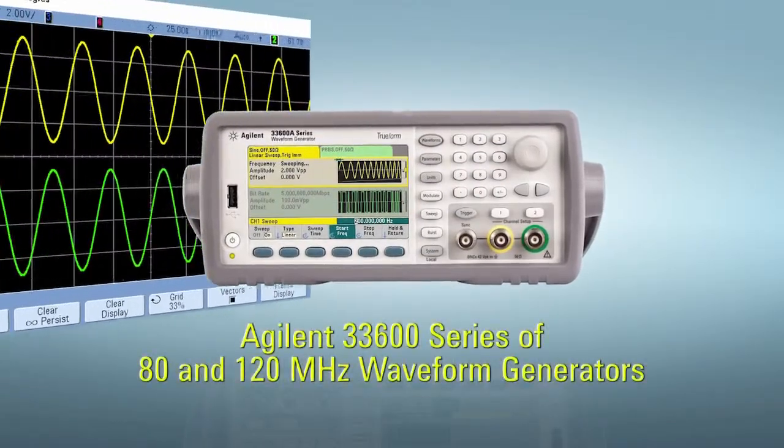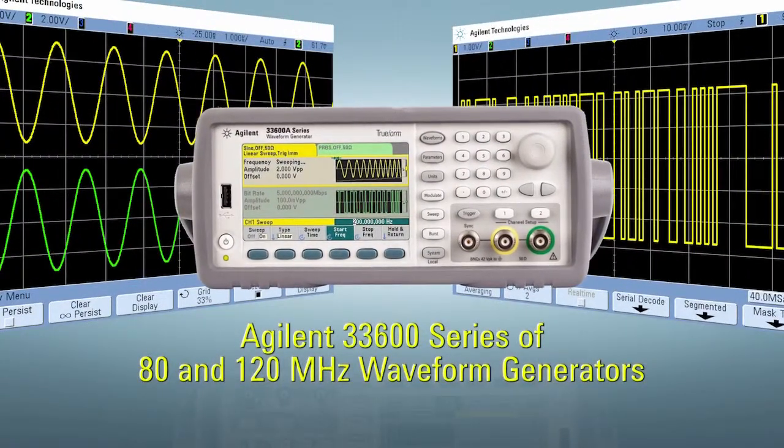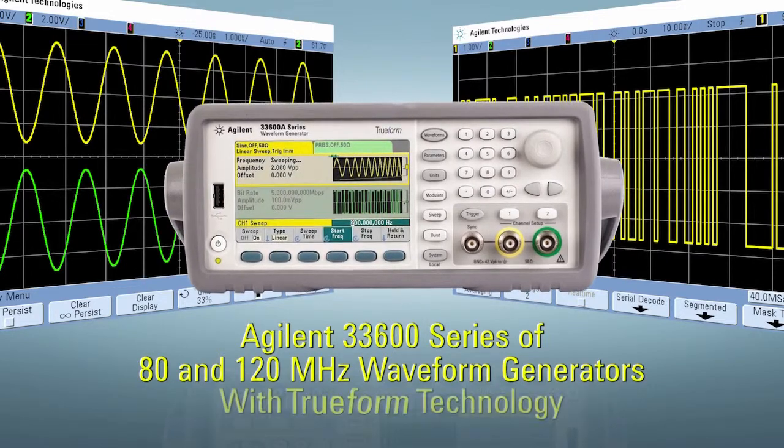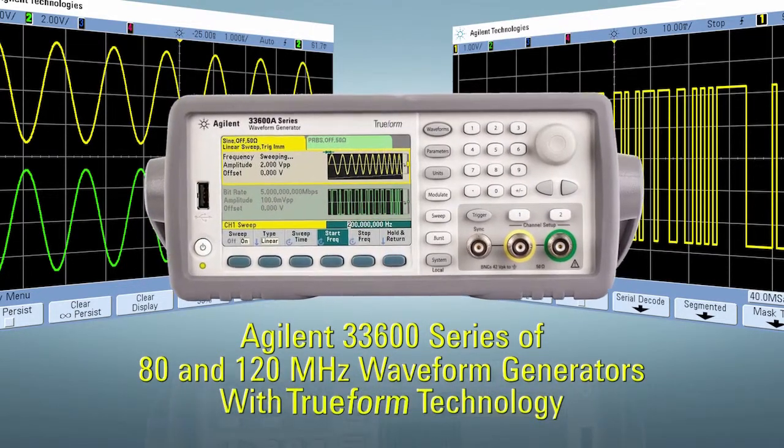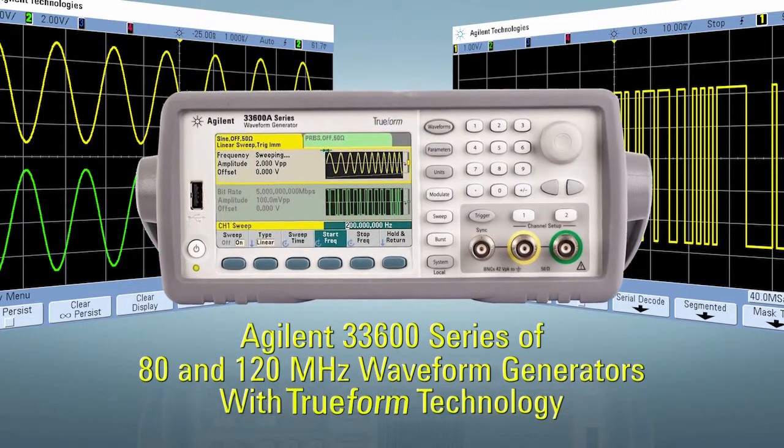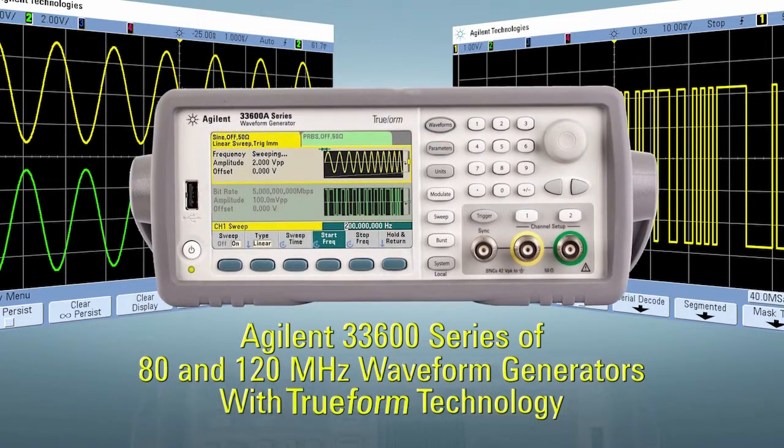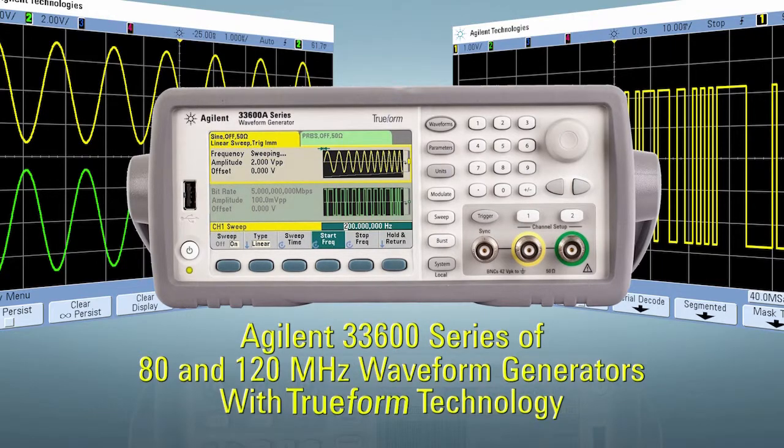Introducing the Agilent 33600 series of 80 and 120 megahertz waveform generators. Built on Agilent's TrueForm technology and the success of the 33500 series of 20 and 30 megahertz generators, the new 33600 series provides unparalleled performance, flexibility, and signal integrity.